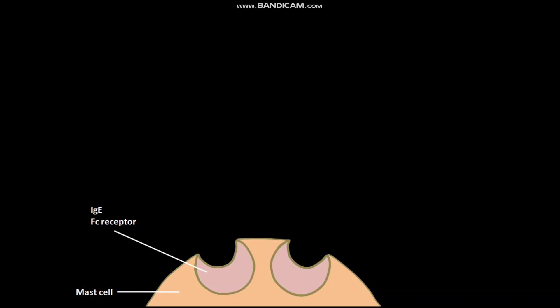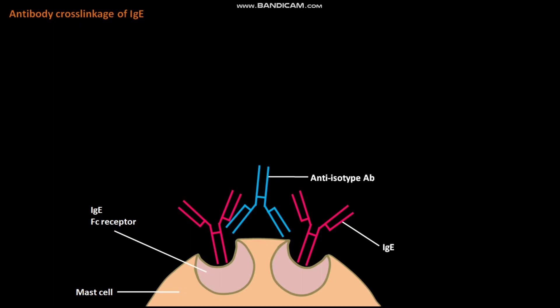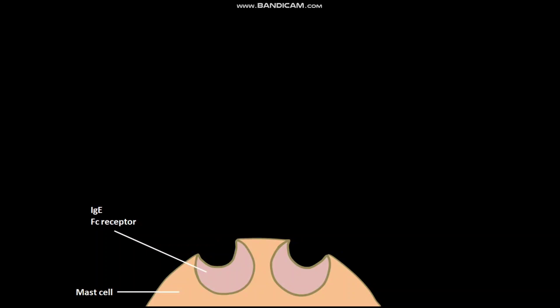We will now discuss mast cell degranulation by antibody cross-linkage of IgE. During this process, IgEs first bind to the IgE Fc receptors present on the surface of the mast cell. The anti-isotype antibody then binds to the bound IgEs in such a way that the bound IgEs are cross-linked by the anti-isotype antibody. The mast cell then undergoes degranulation.